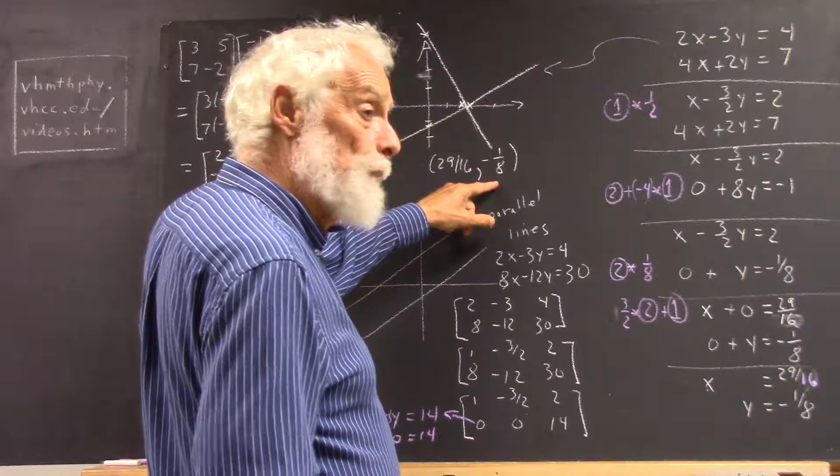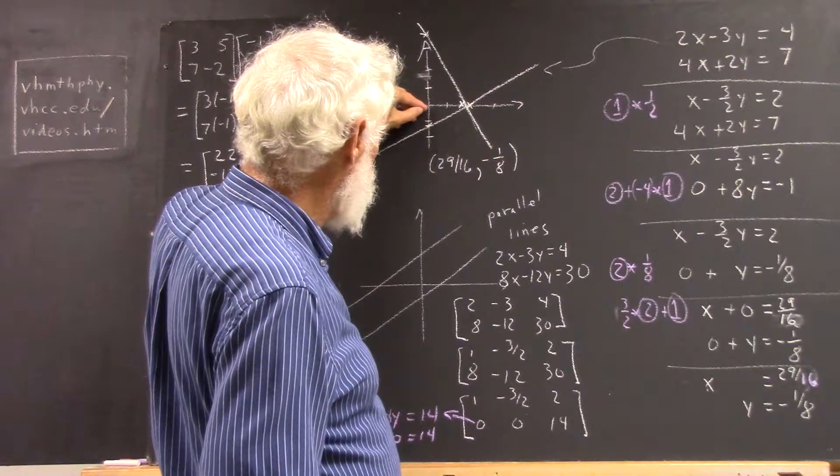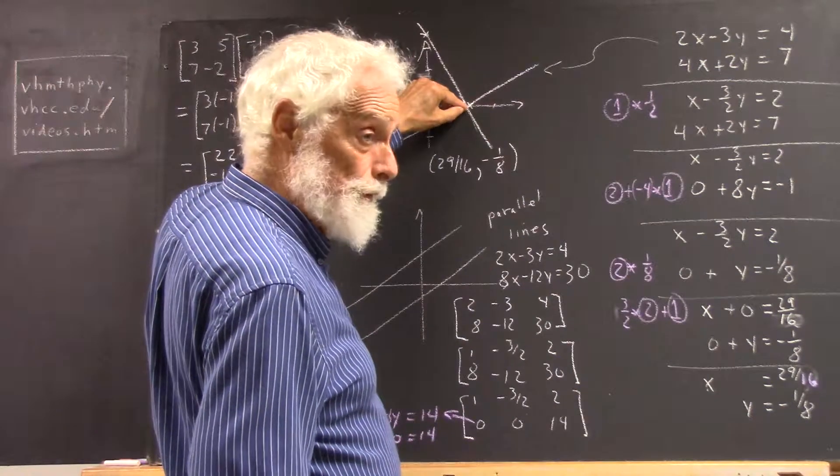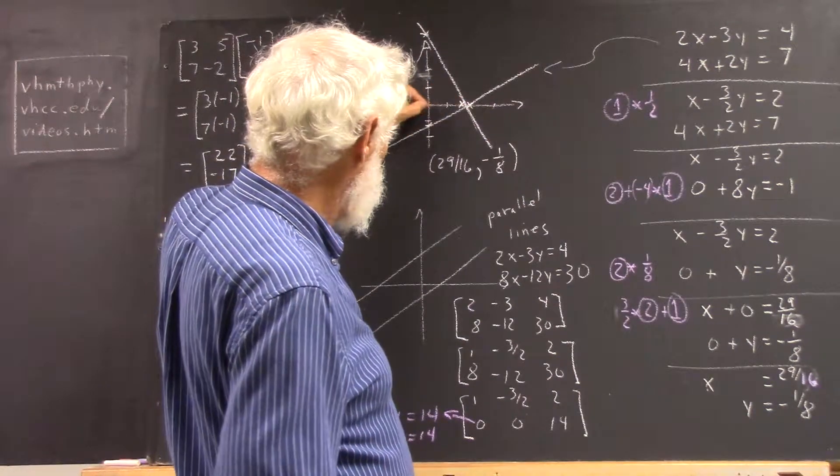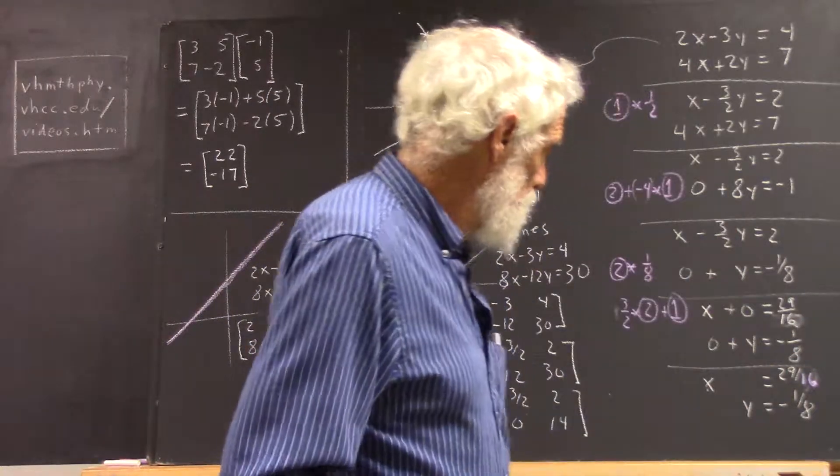And negative 1 eighth is a small number. This is 1, negative 1, well, this would be negative 1, negative 1 eighth would be about here, and that certainly looks like the intersection point might be of y equals negative 1 eighth, so we confirm our solution.